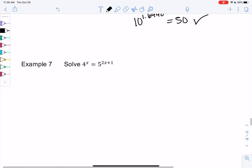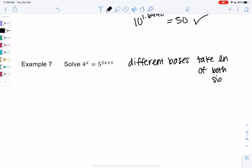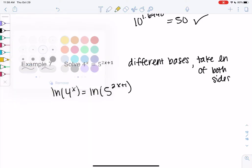So again, we have bases that don't match. We have 4 to the x and 5 to the 2x plus 1. 4 and 5 are different bases. So we're going to go ahead and take the ln of both sides. So we'll say ln of 4 to the x equals ln of 5 to the 2x plus 1. And we'll bring the powers out front.